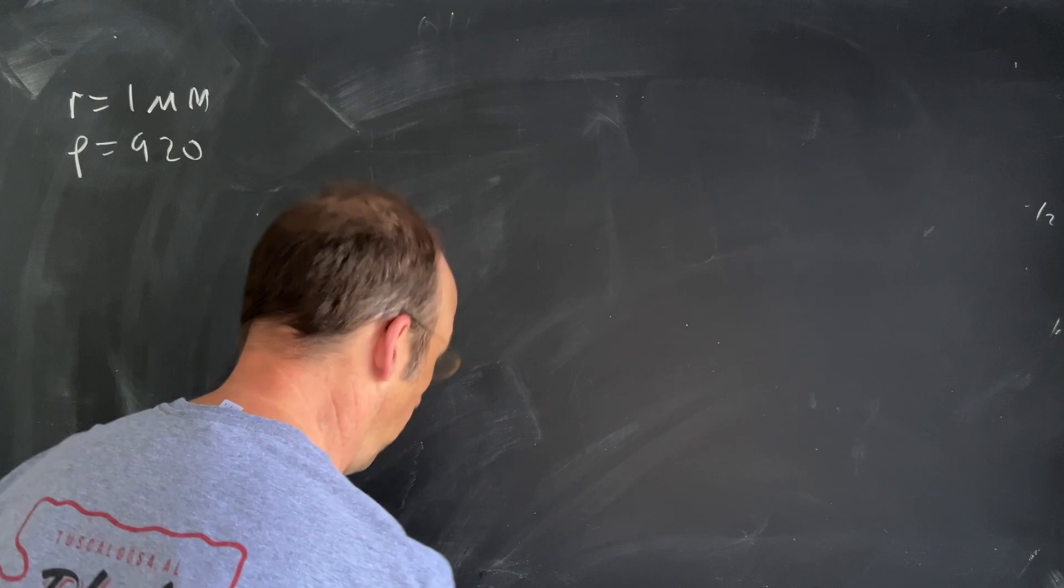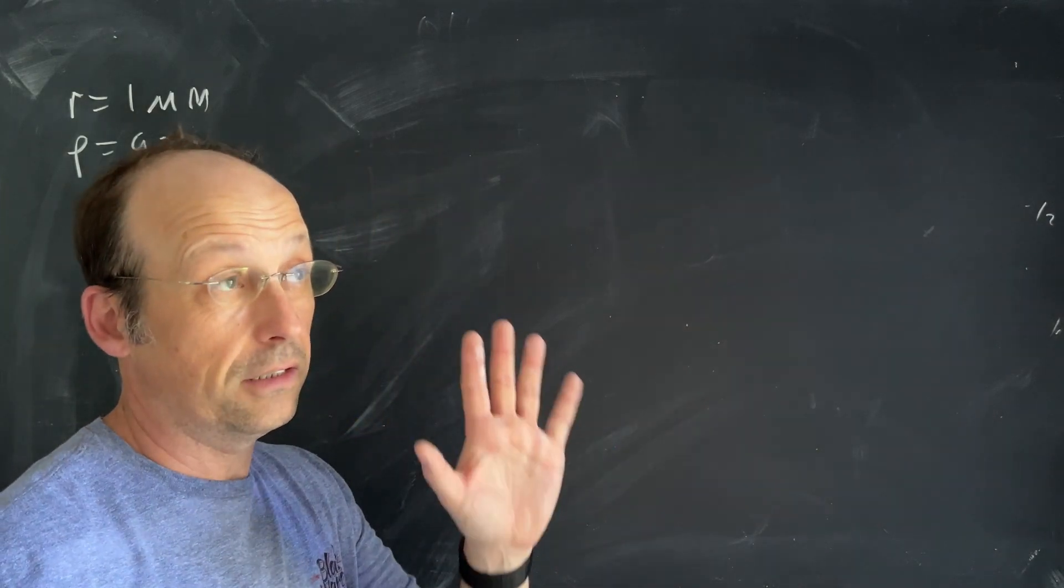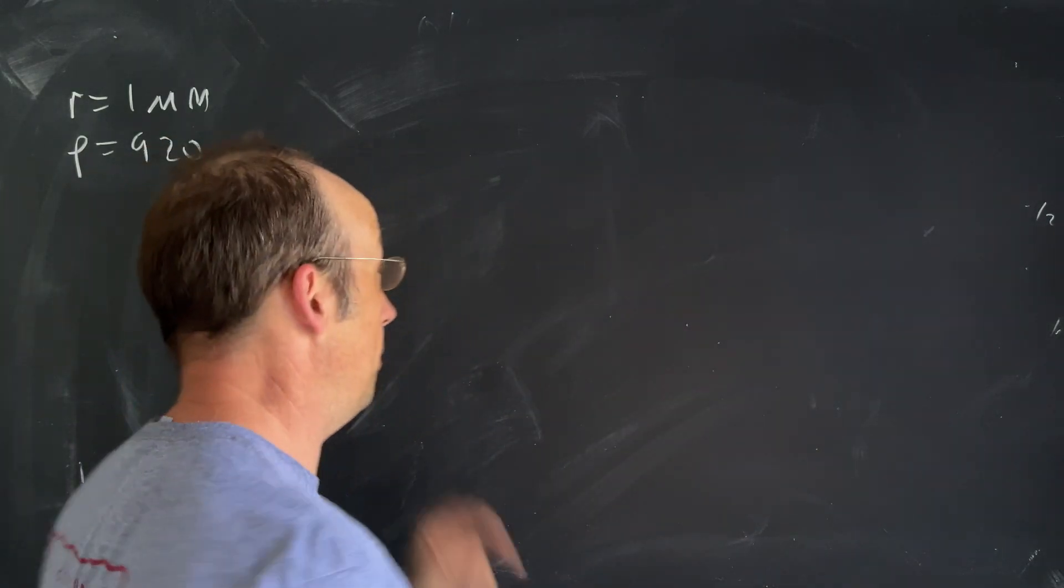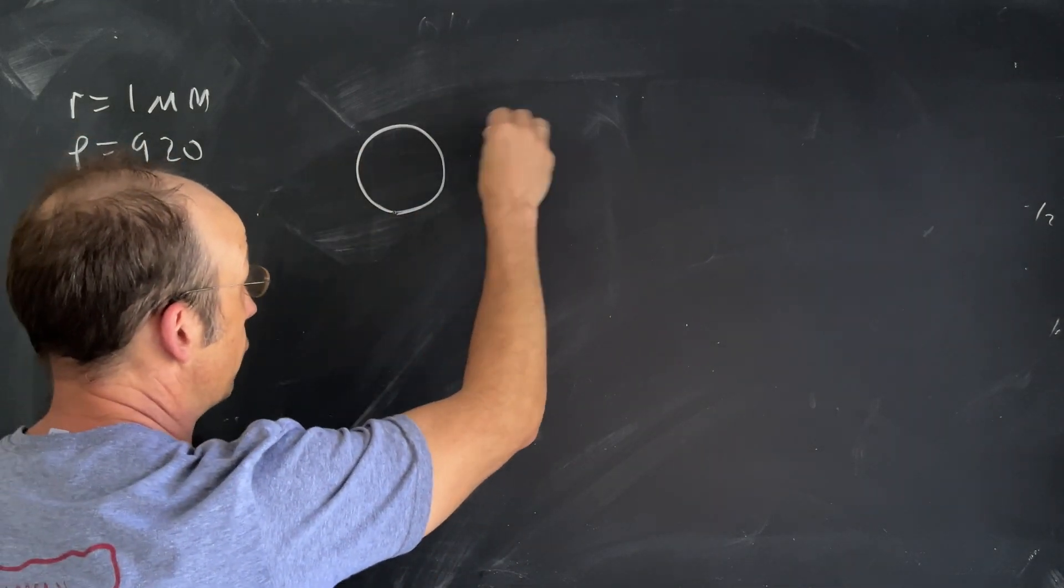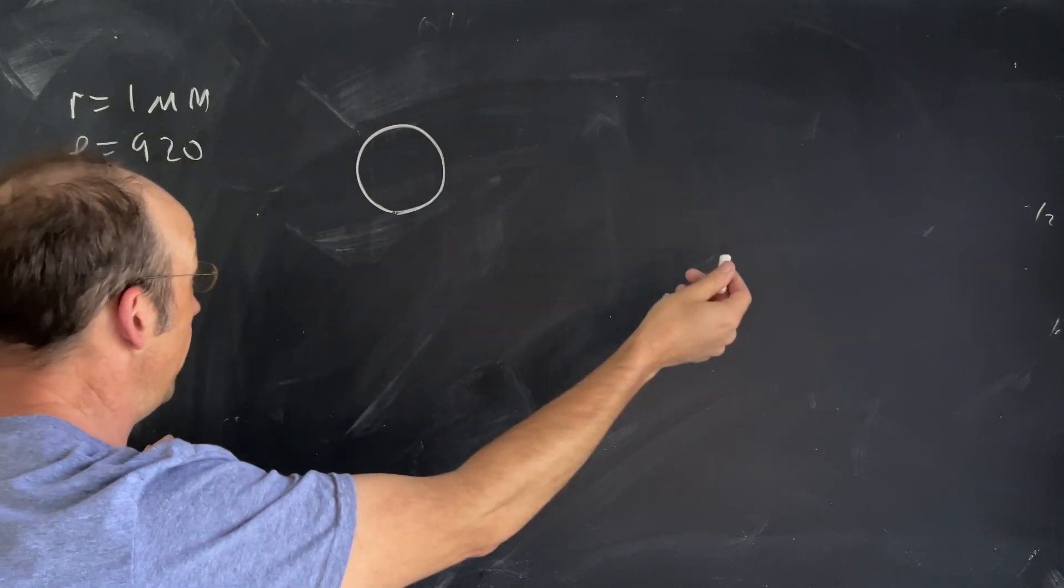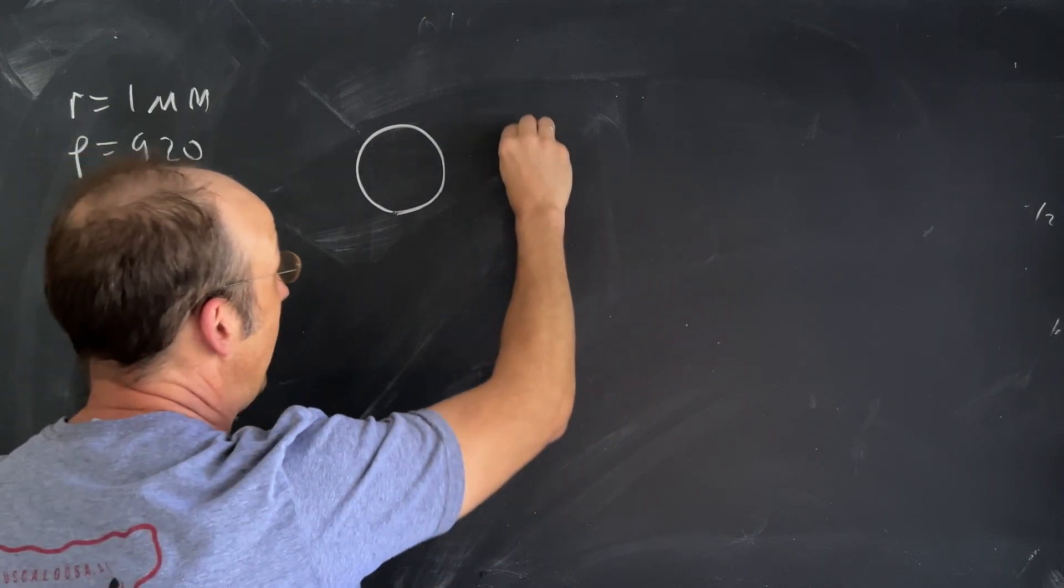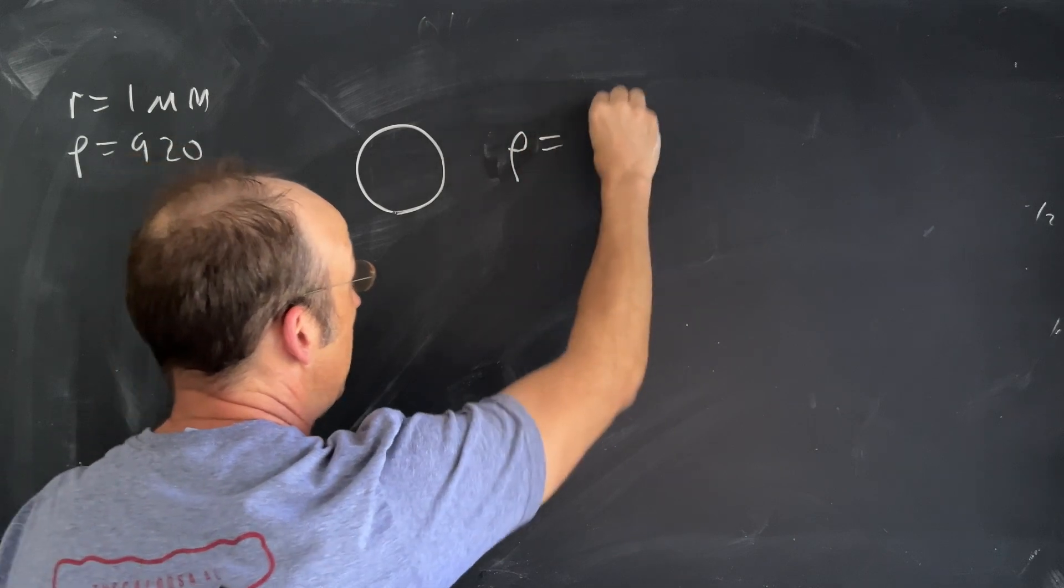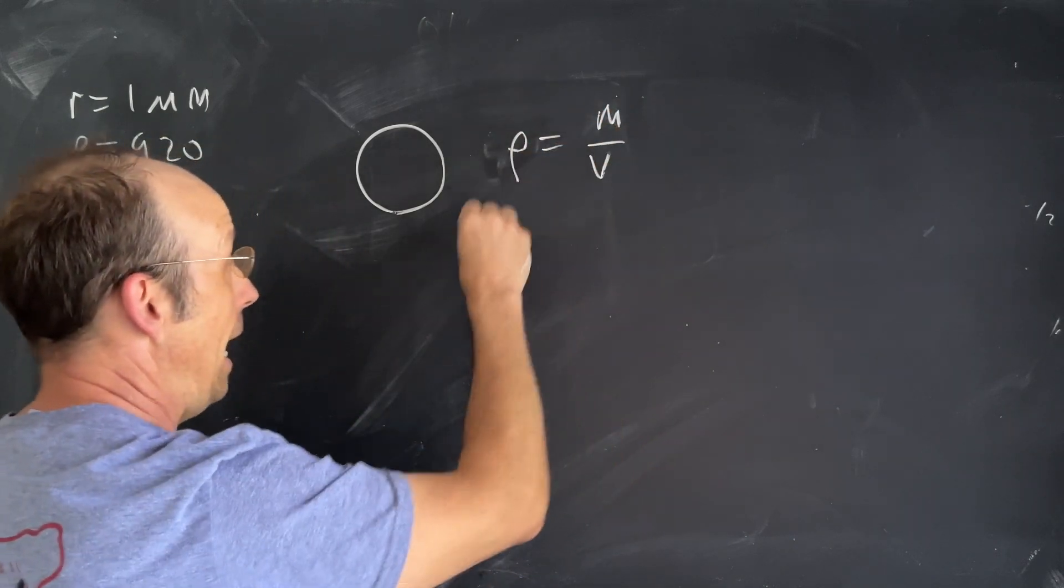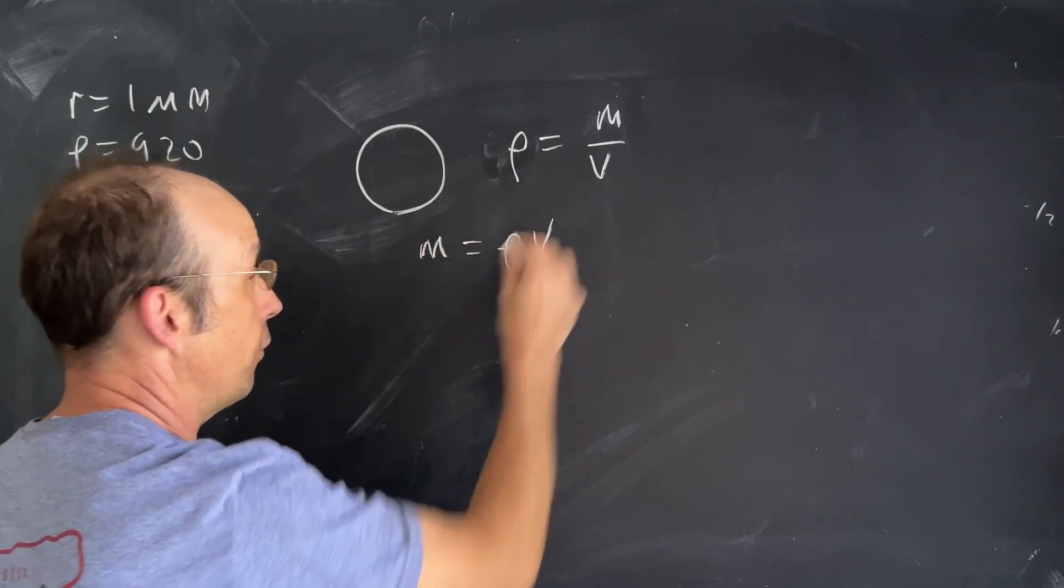The first thing to do is find the weight. This is not really a second semester physics problem, this is just a problem. So imagine I have a sphere with a radius and I want to find the mass. Mass is the density times the volume.